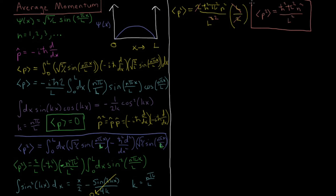This result should make sense: if we take momentum squared and divide it by 2m we get kinetic energy, which for a particle in a box is the only energy since there's no potential. Dividing our result by 2m gives the total energy, and indeed this matches the original energy expression for the particle in a box, differing only by the factor of 2m.